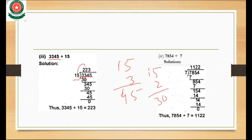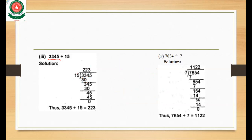15 times 2 is 30. We subtract 33 minus 30 to get 3. We bring down the next digit 4, making 34. We multiply with the number nearest to 34.